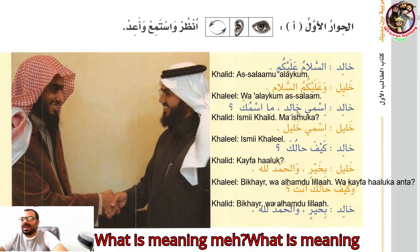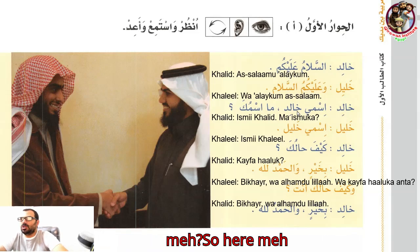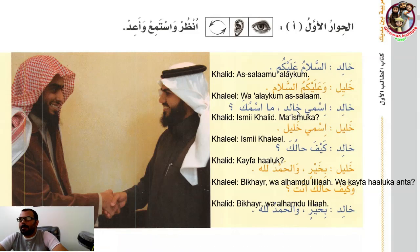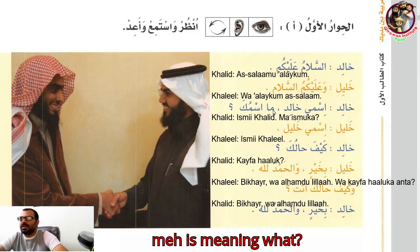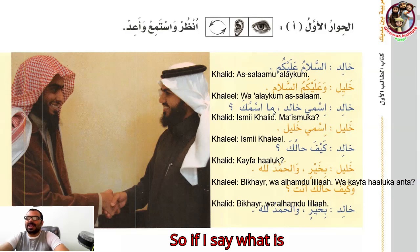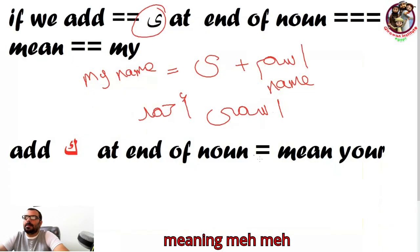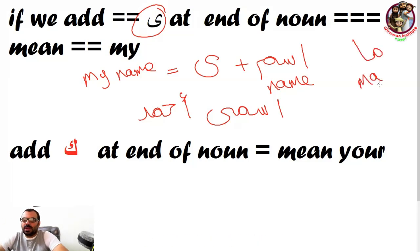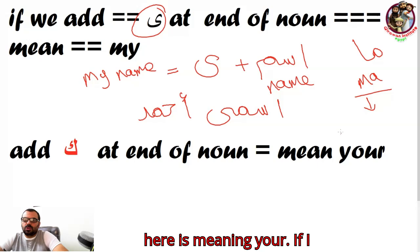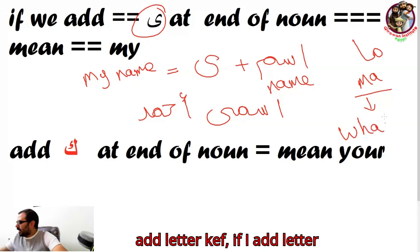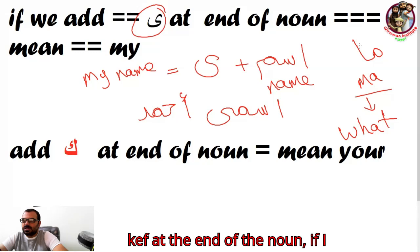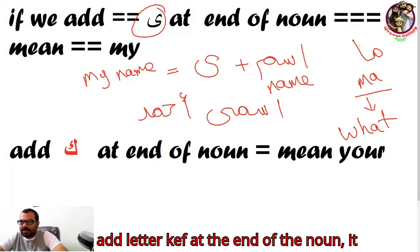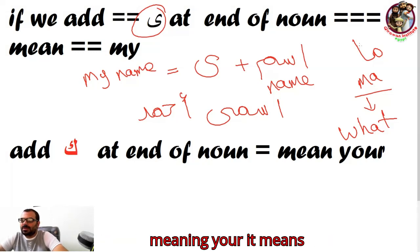What is the meaning of 'ma'? 'Ma' means 'what.' And if I add the letter 'kaf' at the end of a noun, it means 'your.' So 'ism' plus 'kaf' gives us 'ismuk,' meaning 'your name.' With fatha it will be 'ismuki' for feminine.